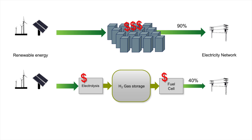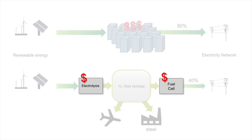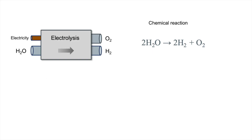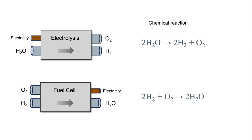Another thing to know is that hydrogen is useful for a lot of applications for which batteries are ill-suited, such as airplanes or making steel. Okay, so let's go back to how we can make hydrogen less expensive. There are two chemical reactions: electrolysis and fuel cell. The first one, electrolysis, takes electricity and water in and produces oxygen and hydrogen. The fuel cell does the opposite reaction, where it takes oxygen and hydrogen in and produces electricity and water. So what we want to do is drive these reactions as cheaply and as efficiently as possible.